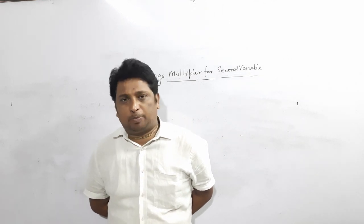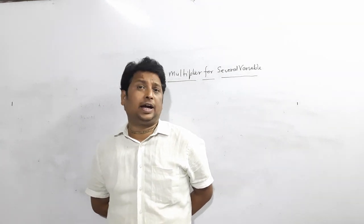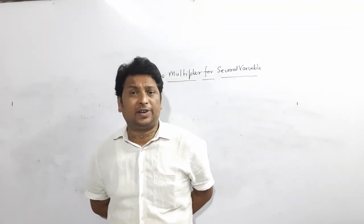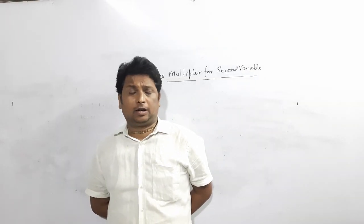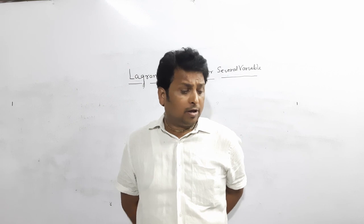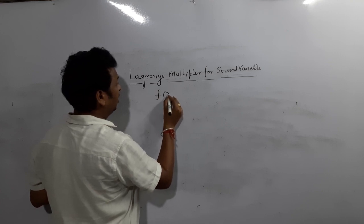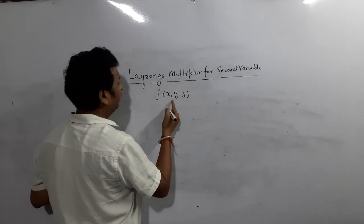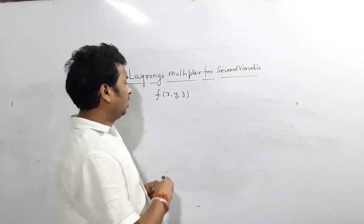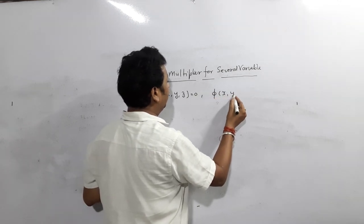Hello friends, today I will explain a very important topic: the Lagrangian multiplier method to find maxima and minima — actually maxima and minima under some condition. We can solve easily by Lagrangian multiplier method. We can solve by any other method also, but using the Lagrangian multiplier it becomes easy. In this method, they will always give one function f(x, y, z) — the function which we are going to maximize or minimize — as well as a condition, which we denote by phi(x, y, z) = 0.